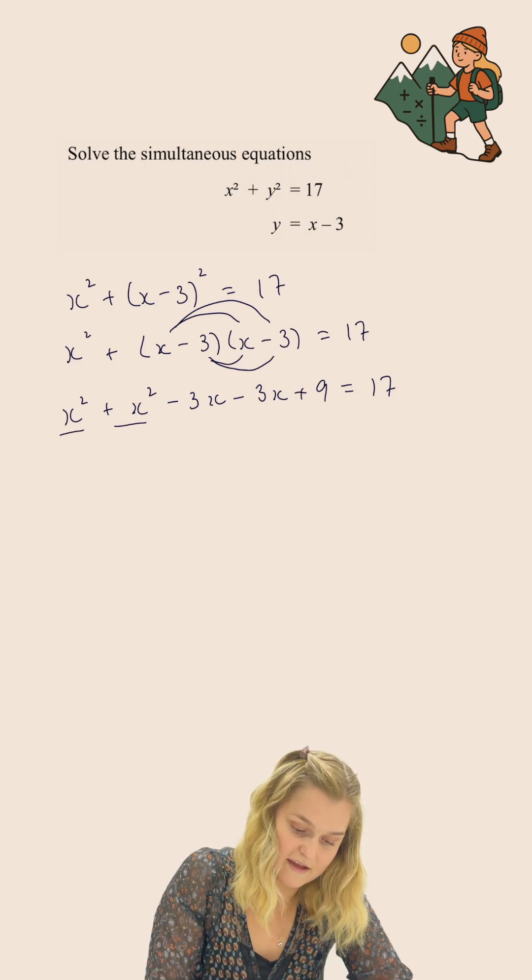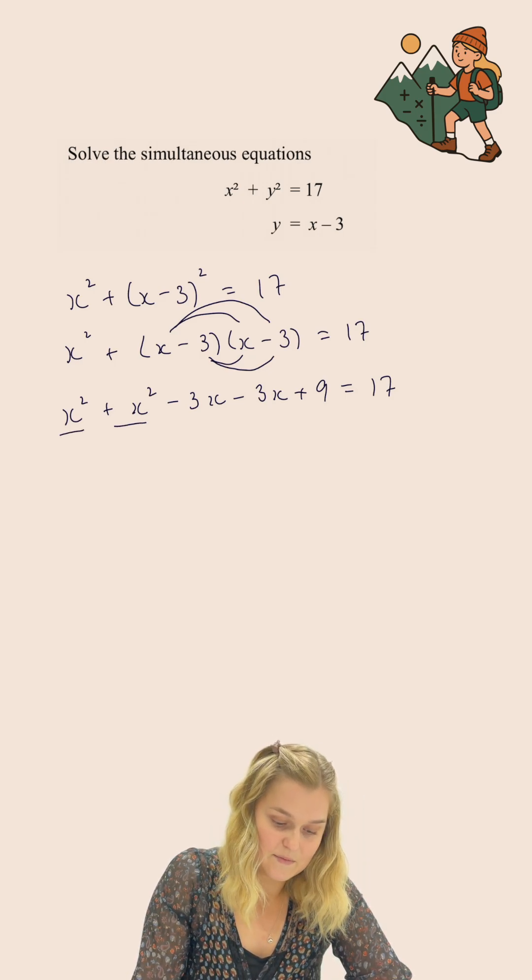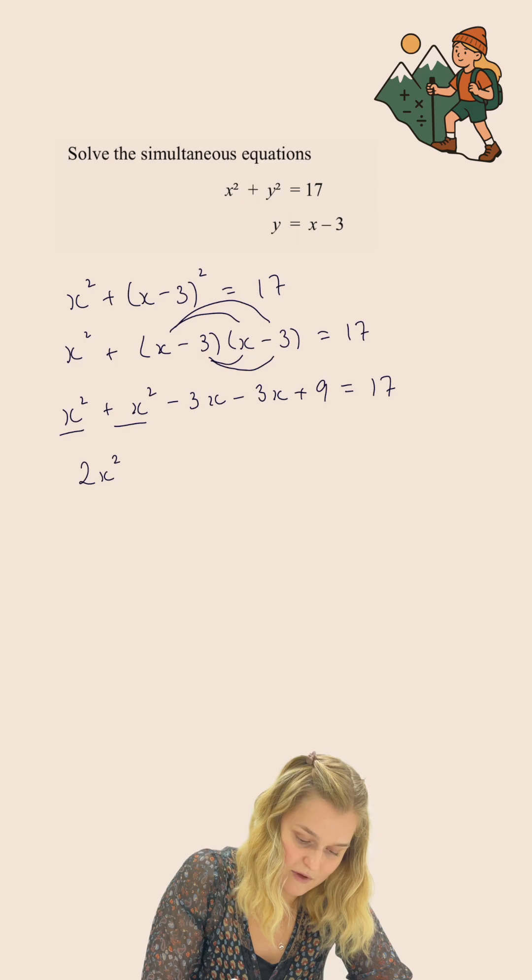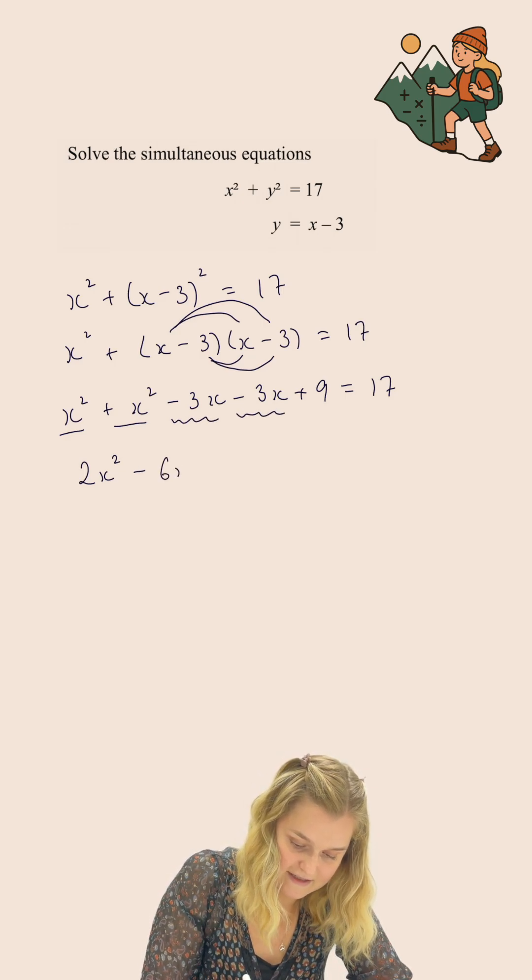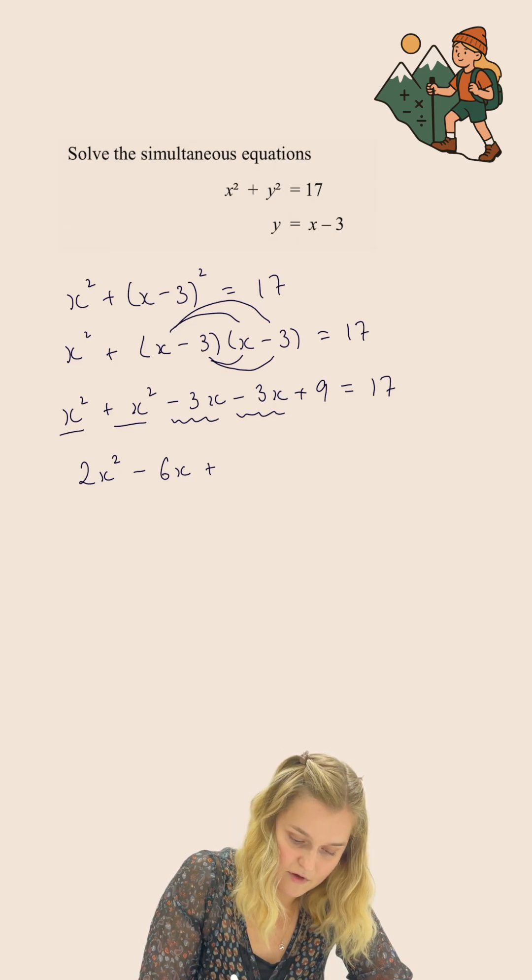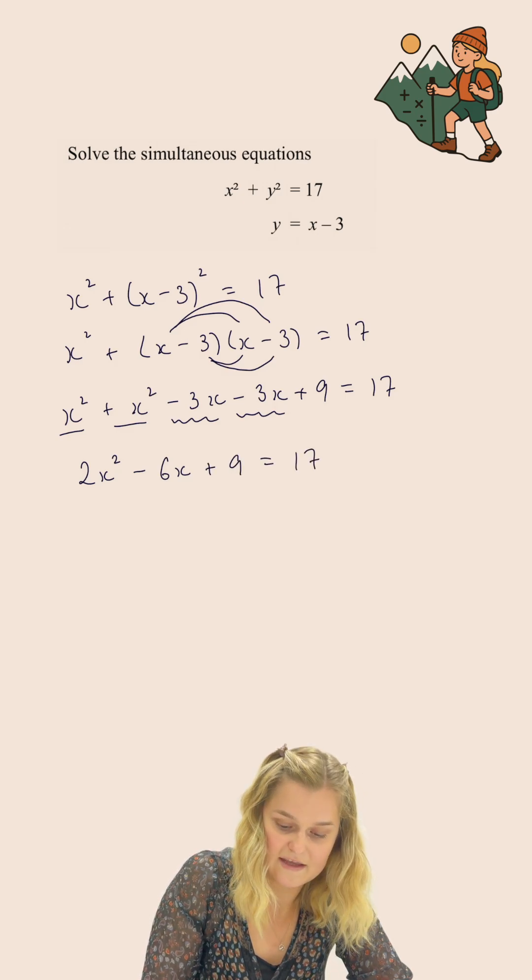I'm now going to simplify everything that I've got here. x squared plus x squared gives me 2x squared, and minus 3x minus 3x gives me minus 6x. I've still got the plus 9, and I've still got the equals 17.